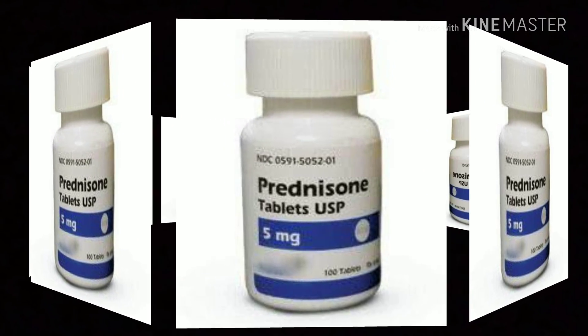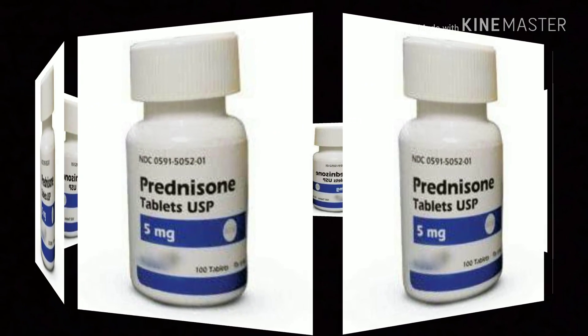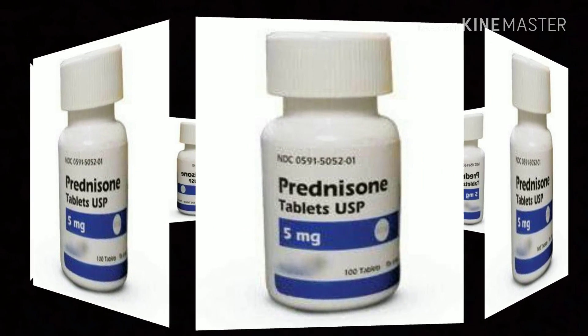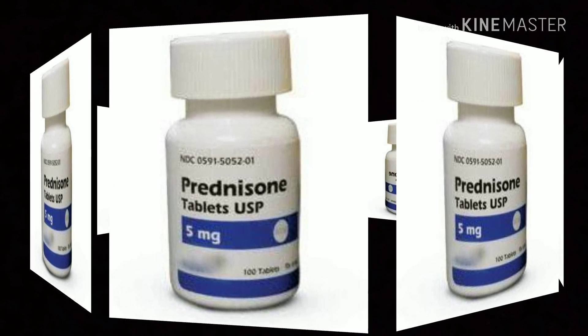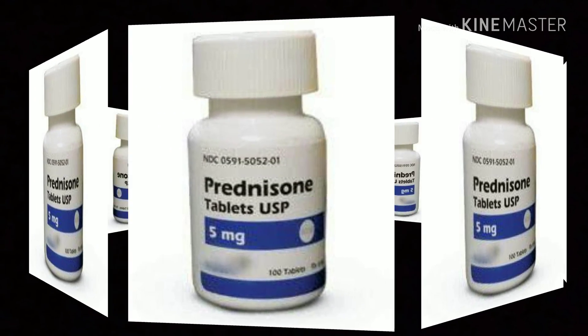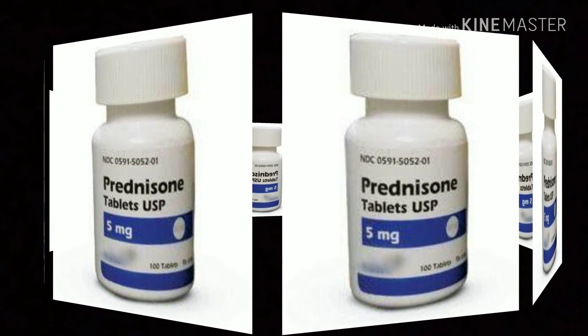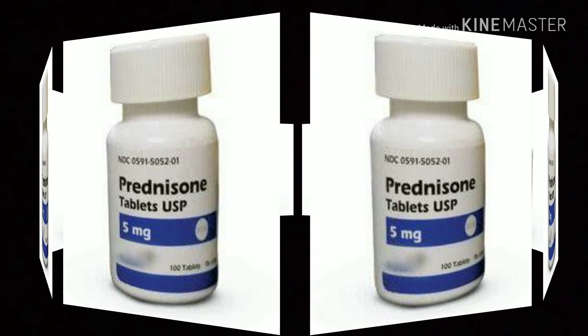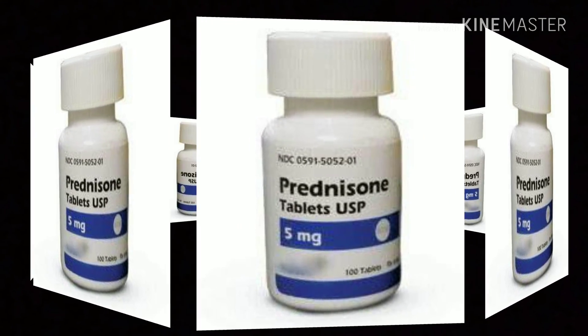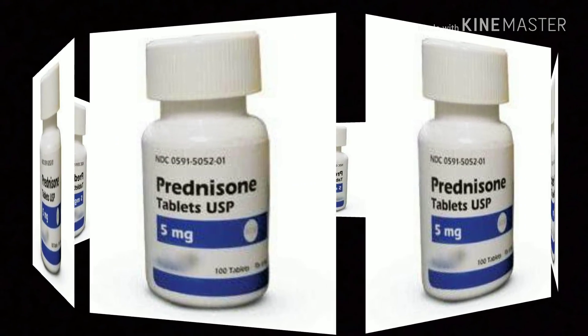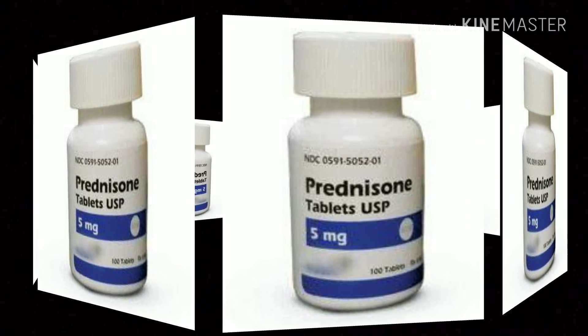Treatment for Addison's disease involves hormone replacement therapy to correct the levels of steroid hormones your body isn't producing. Some options include oral corticosteroids such as prednisone, or cortisone acetate and hydrocortisone, which may be used to replace cortisol.